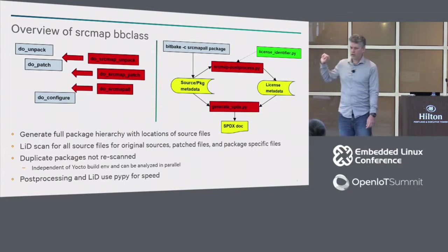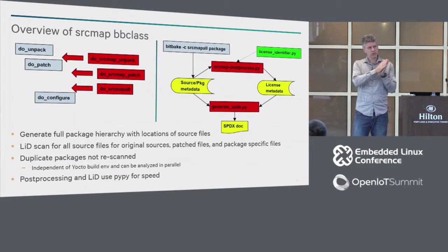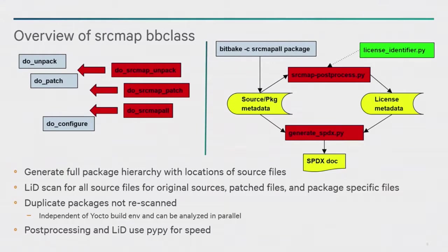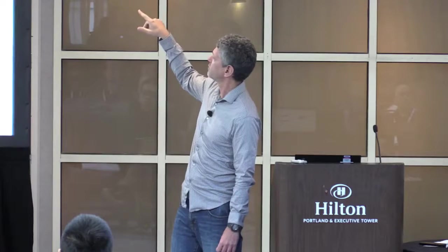There's also a do source map all target generated, so you could run that and it would traverse all the different packages related to building a particular package — for instance a package group or final image — going through all related dependencies. The way it would work: you run BitBake with the source map all task for a particular package, package group, or image, which generates metadata for where all the source is and package information. Then there would be a script called source map post process, which hooks into the license identifier part — that's what connects to LID to generate license metadata, in an intermediate metadata form that you can then run a script to generate SPDX from.